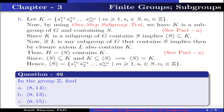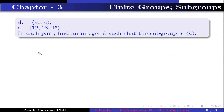Question number 40. In the group ℤ, find: part a — the set generated by 8 and 14; part b — the set generated by 8 and 13; part c — the set generated by 6 and 15; part d — the set generated by m and n; part e — the set generated by 12, 18, and 15. In each part, find an integer k such that the subgroup is generated by k.